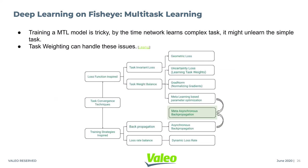Training an MTL model is a tricky part. By the time the network learns complex tasks, it might unlearn simple tasks, making learning an impossible process. A way to handle this is via task weighting. In our recent work, we have proposed a meta-asynchronous back-propagation approach for efficient multi-task learning, which is found to be scalable to even five or more tasks.